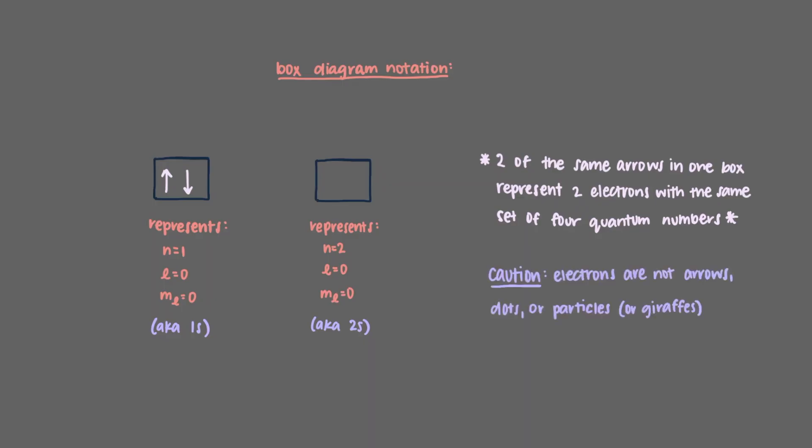But please just be careful, electrons aren't arrows, dots, particles, or giraffes, and they certainly are not spinning. Electrons are waves. The box diagram notation with the arrows is an accounting method. It lists the electron waves present in the atom.